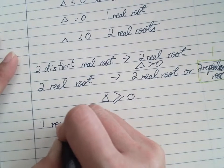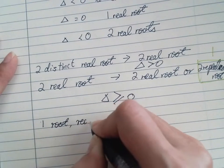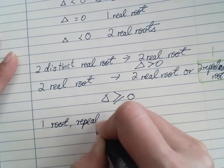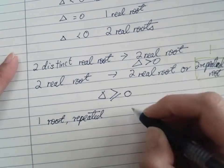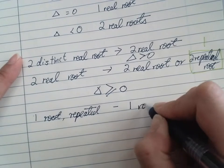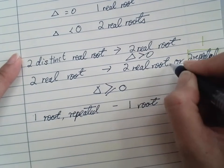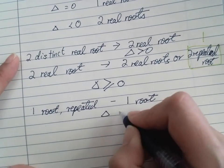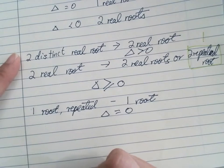One root, repeated root. So that would have to be one root only. So the discriminant equals to 0. Delta equals to 0.